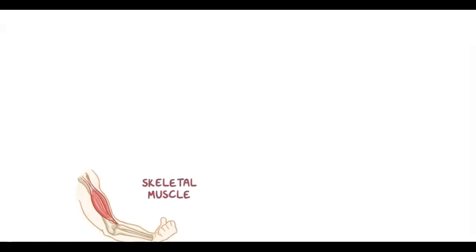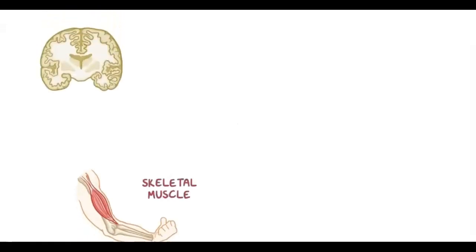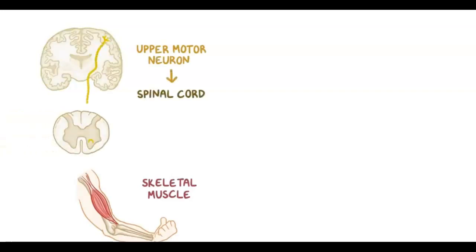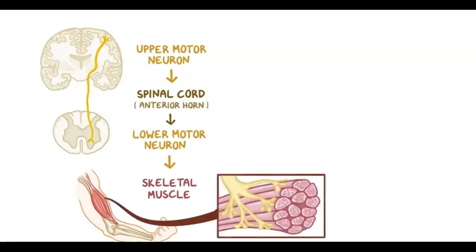In order for a skeletal muscle to contract, your brain sends a signal from an upper motor neuron down the spinal cord where it synapses with the cell bodies of lower motor neurons, found in the anterior horn of the spinal cord. From here, the signal travels through the lower motor neuron's axon until it reaches the axon terminal, which is next to a muscle fiber.